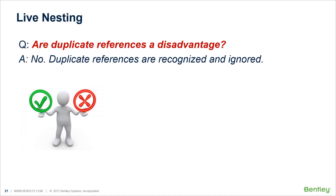What about duplicate references — is there a disadvantage? No. Duplicate references are recognized and ignored, so you don't have to worry about that when using live nesting. With that, I would like to thank you, and hopefully this gives you some insight on how to better manage your files in terms of project management and setting up your projects. Thank you and have a wonderful day.